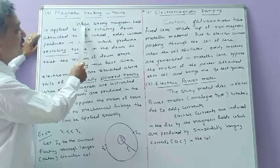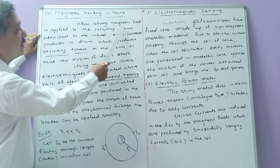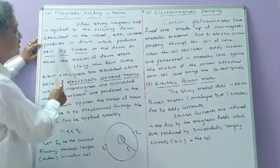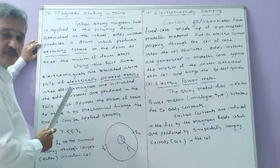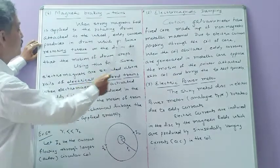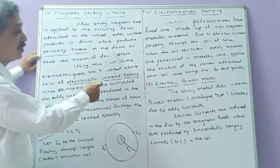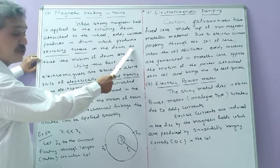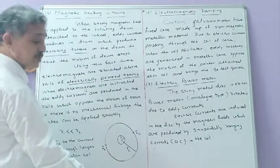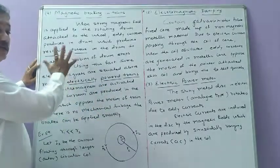When a strong magnetic field is applied to the rotating drum attached to the wheel, eddy currents are produced in the drum. These eddy currents produce a restoring torque on the drum, which causes the motion of the drum to stop and the vehicle comes to a state of rest immediately.